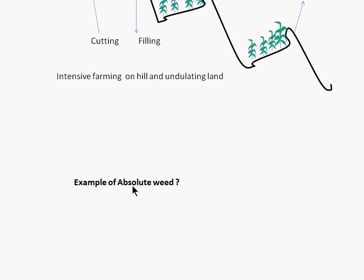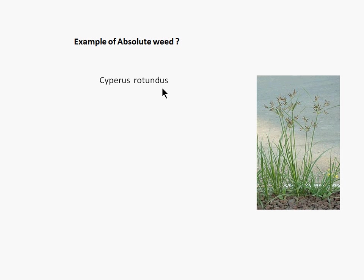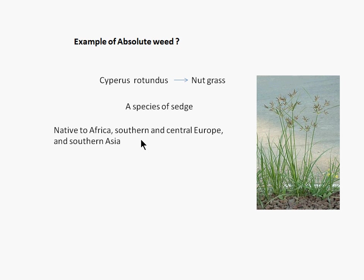The next question: an example of absolute weed. Your answer is Cyperus rotundus, sometimes called nut grass — this is the common name of Cyperus rotundus. It belongs to the family Cyperaceae and is a species of sedge. If we see the origin of Cyperus rotundus, it is native to Africa, Southern and Central Europe, and Southern Asia as the most probable center of origin, because maximum diversity of Cyperus rotundus is found in this area.